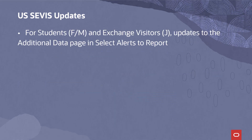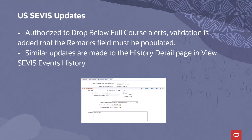For both Students FM and Exchange Visitors J, there are a number of updates to the additional data page in Select Alerts to reflect changes to the data required for some alerts in release 6.80. For example, for authorised to drop below full course alerts, validation is added that the remarks field must be populated. Similar updates are made to the History detail page in View SEVIS events history for both Students and Exchange Visitors.